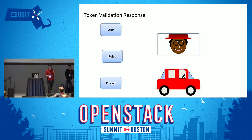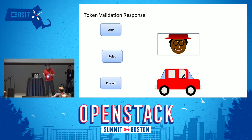What's in that validation response? There are three basic things: who is the user requesting this, what roles do they have, and on what project is it?